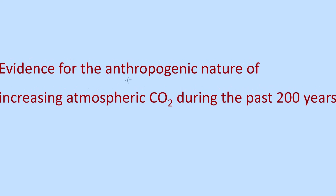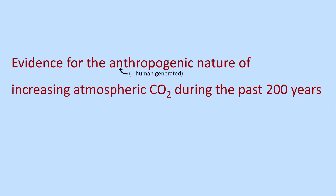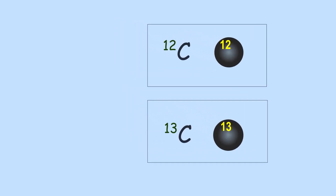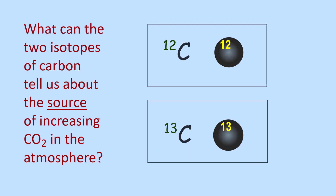Welcome to the Evidence for the Anthropogenic Nature of Increasing Atmospheric Carbon Dioxide During the Past 200 Years. There is much evidence that the rise of carbon dioxide during the past 200 years is human-generated. This video summarizes compelling evidence from three studies that investigated carbon isotopes occurring in ice cores that correlate to atmospheric carbon dioxide. So what can the two isotopes of carbon tell us about the source of increasing carbon dioxide in the atmosphere?